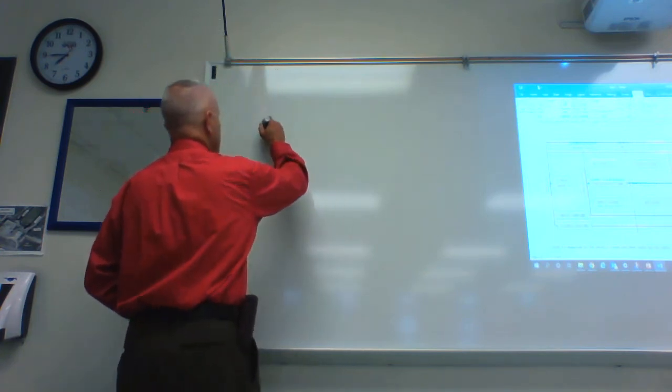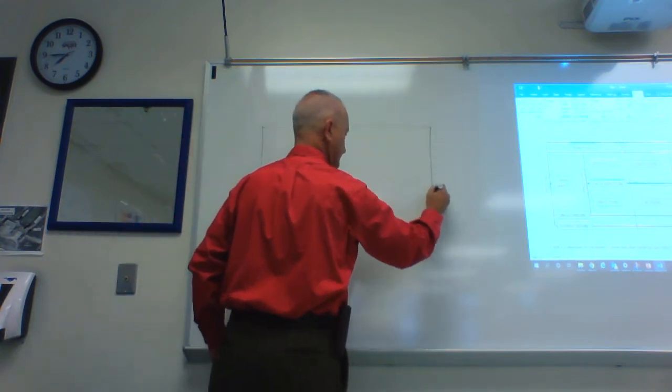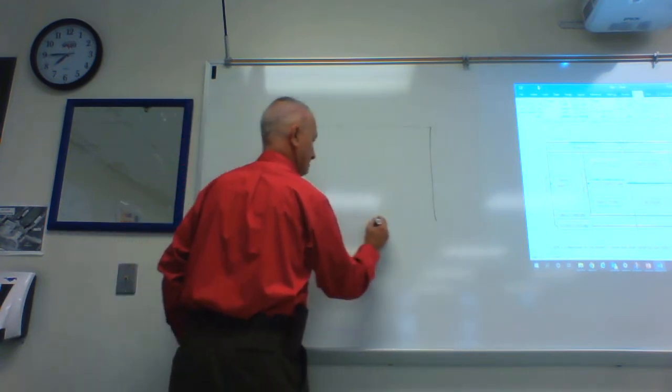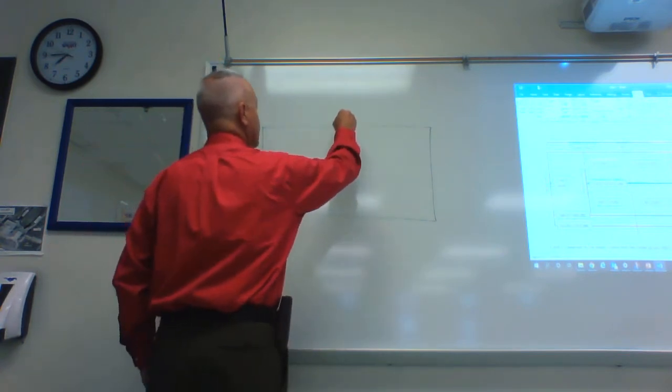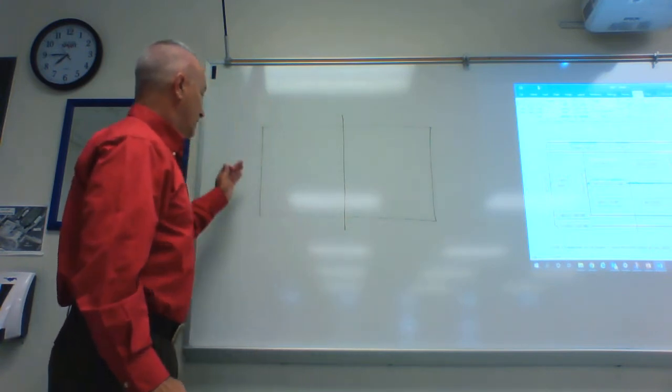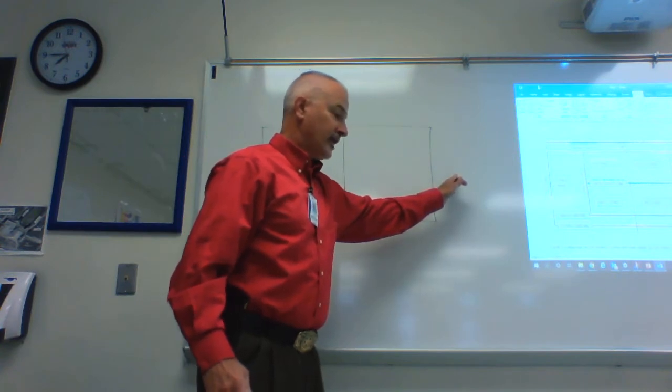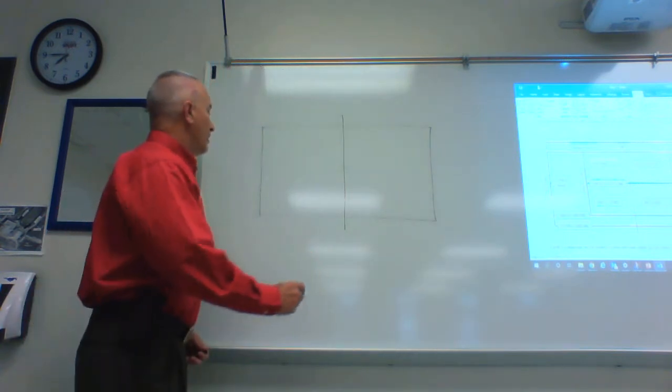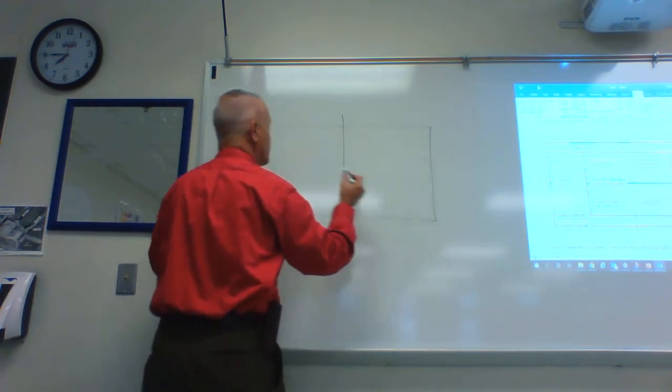The tennis court is a rectangle, and that rectangle is divided by a net. You will be playing on one side, your opponent will play on the other side. Now, this area right here is called the baseline.